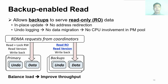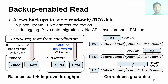To alleviate the bandwidth bottleneck of PM in the primary, FORD enables backups to serve read requests. The coordinators can read read-only data and their versions from backups, thus balancing the load to improve throughput. Since FORD in-place updates the backups, there is no address redirection. Moreover, due to writing undo logs, it is unnecessary to migrate new data after the transaction commits, which meets the requirement of memory disaggregation — that is, not involving the CPU in the PM pool. Reading from backups does not weaken correctness, since FORD validates the versions of read-only data before commit. If any version becomes stale, the coordinator aborts the transaction.